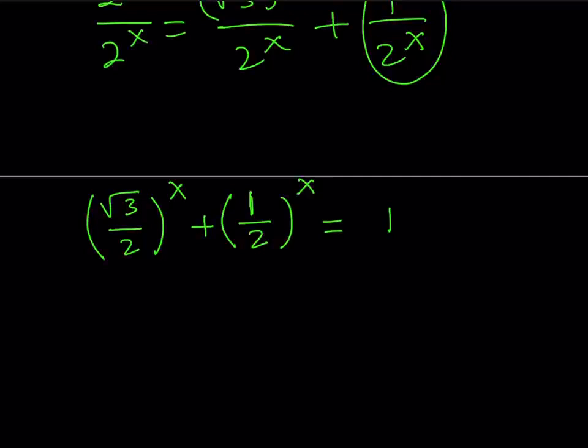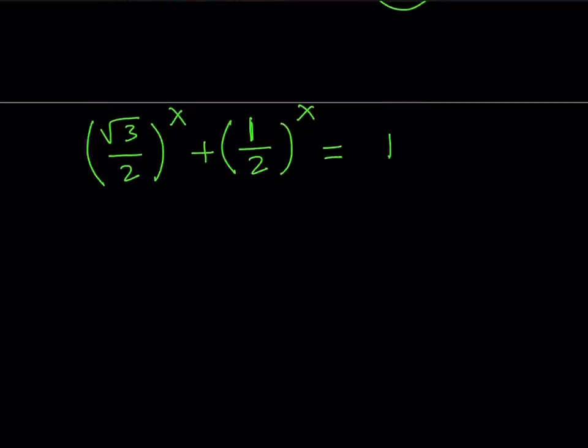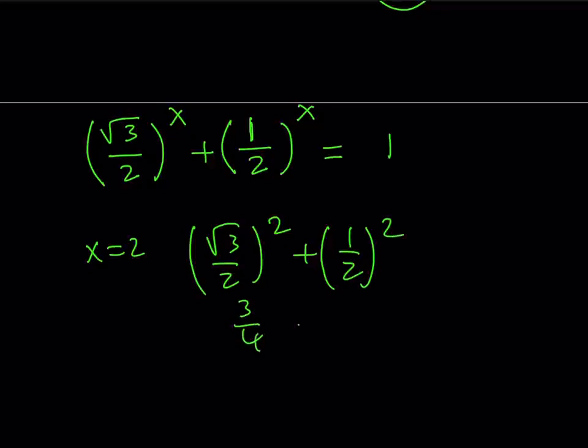Remember, in our geometry puzzles, we used it, but we can also use it in algebra. So, we do know that x equals 2 works. Why? Because if you square root 3 over 2, and you square 1 half, you get 3 fourths plus 1 fourth, which is equal to 1. Great. So, x equals 2 is a solution.